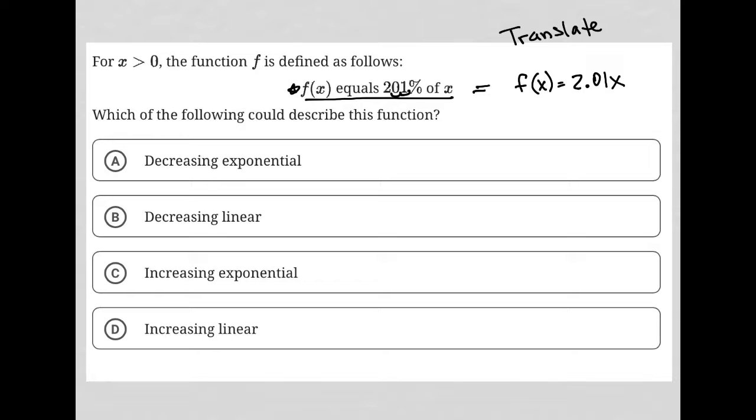Which of the following could describe this function? So, choice A, decreasing exponential. Well, no, this is a positive 2, so it's not decreasing at all. Decreasing linear is not decreasing at all. Increasing exponential. It's not an exponential because we're just multiplying 2 times x.